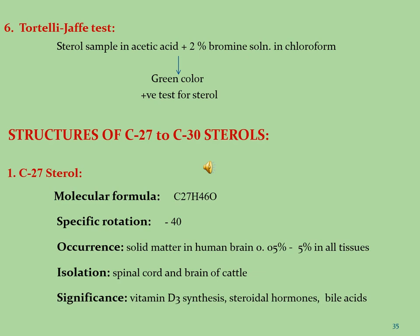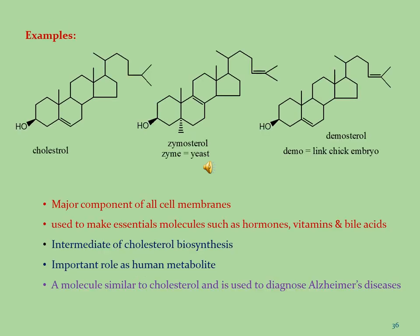The sixth test is the Dot LHF test. In this test, the sample is taken in glacial acetic acid and 82% formic solution in chloroform. If we observe green color, this is a positive test for sterols. Now, the carbon-27 sterols: their molecular formula is C27H46O and specific rotation is −40. These sterols are found in the human brain (0.05% to 5% in all tissues), isolated from the spinal cord and brain of cattle, and used for the synthesis of vitamin D3, steroidal hormones, and bile acids. Common examples of C27 sterols are cholesterol, zymosterol, and desmosterol. Cholesterol is a major component of Alzheimer's brains and is used to make essential molecules such as hormones, vitamins, and bile acids.